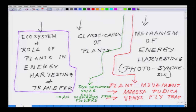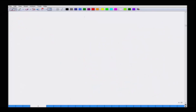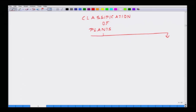Coming back to the classification of plants - this is very essential before you can understand where all these things fit in. Plants can be broadly classified in a very simple manner into two groups: plants which are growing on land, and plants which are growing in water. This is the broadest classification.